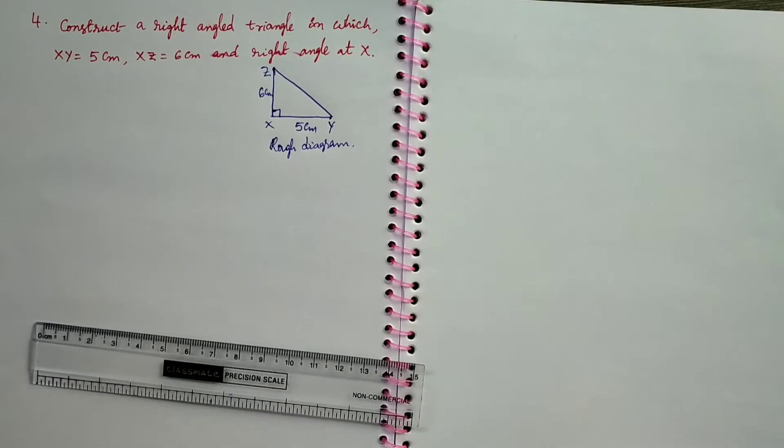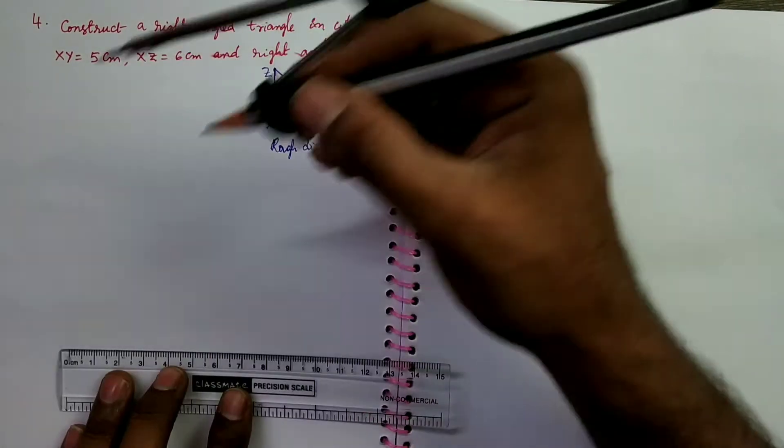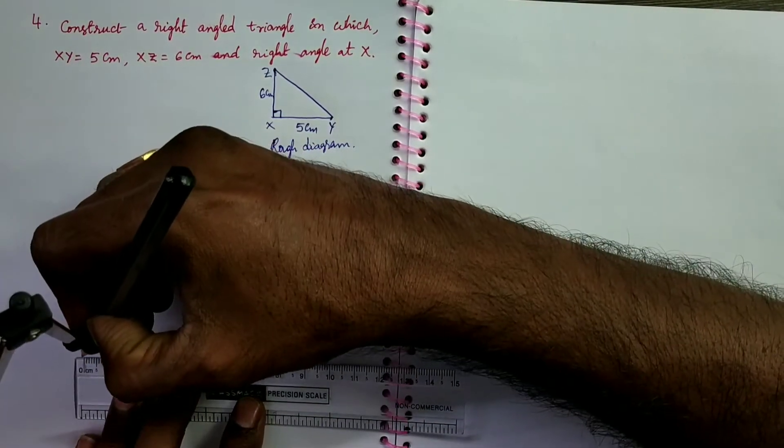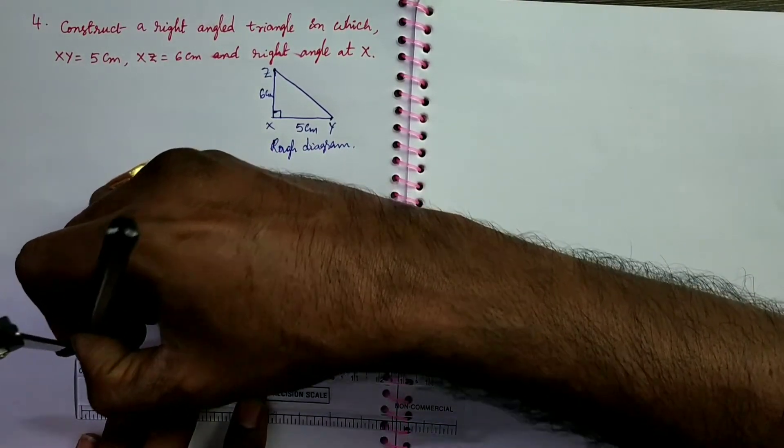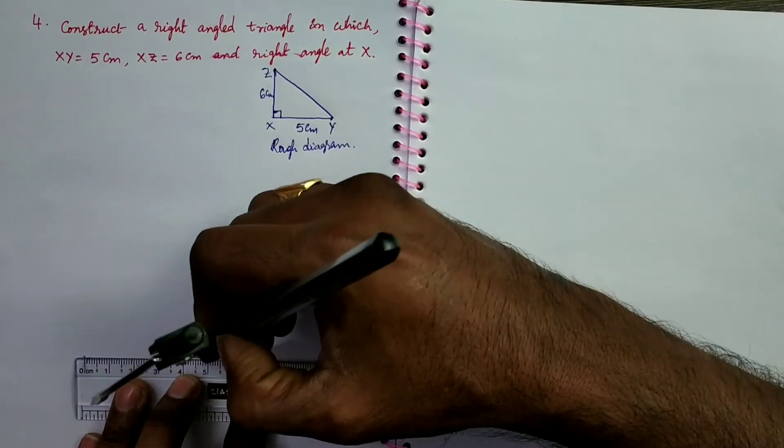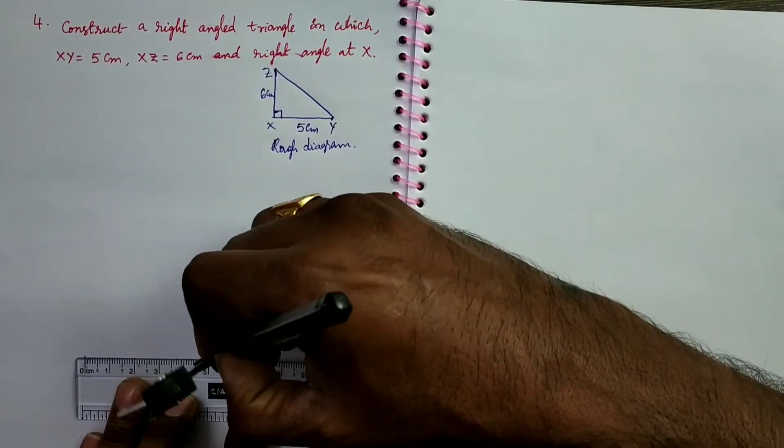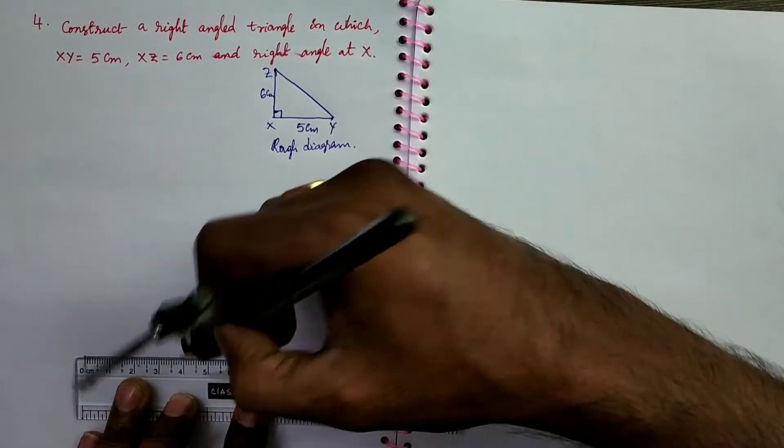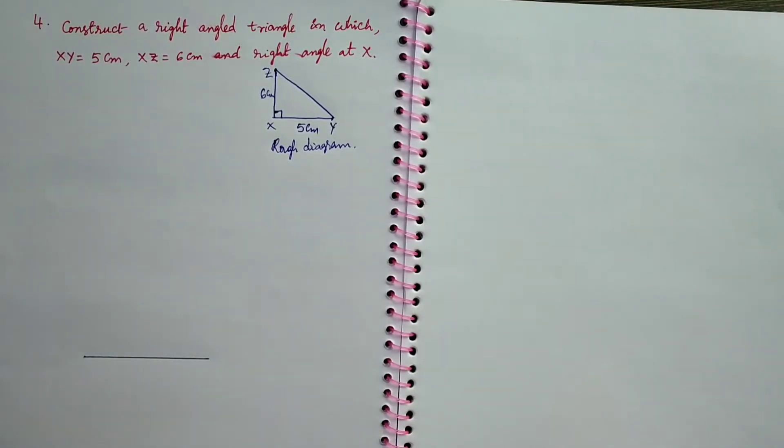Draw a line segment XY equals 5 cm. Keep a point at 0. Take a scale, keep a point at 0 and keep another point at 5. Between these two points, draw a line segment. This length is 5 cm.